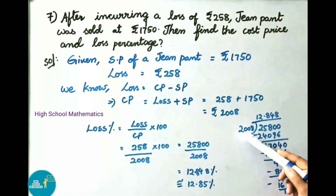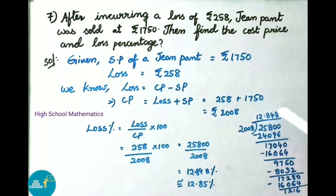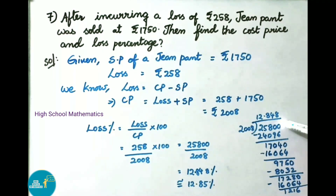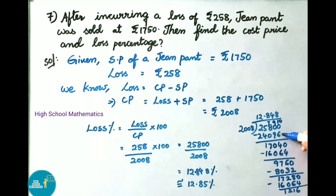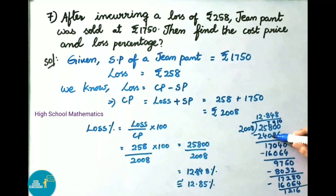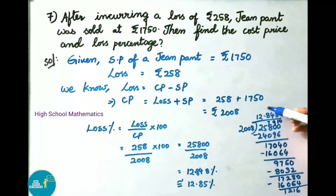2008 goes into 25800: 2008 times 12 is 24096. Subtracting 24096 from 25800, borrowing as needed: 10 minus 6 is 4, 9 minus 9 is 0, 7 minus 0 is 7, 5 minus 4 is 1. Remainder is 1704, which is less than 2008. We place a decimal point and add a zero, making the number 17040.